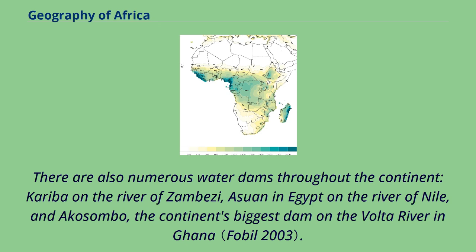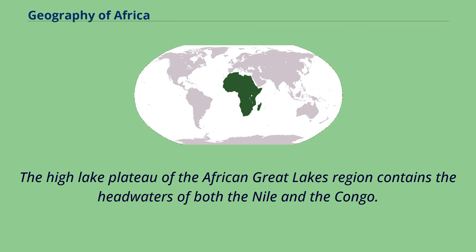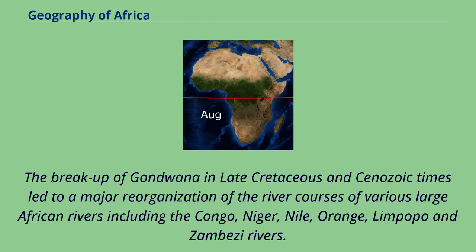There are also numerous water dams throughout the continent: Kariba on the Zambezi River, Aswan in Egypt on the Nile, and Akosombo, the continent's biggest dam, on the Volta River in Ghana. The high lake plateau of the African Great Lakes region contains the headwaters of both the Nile and the Congo. The breakup of Gondwana in late Cretaceous and Cenozoic times led to a major reorganization of the river courses of various large African rivers including the Congo, Niger, Nile, Orange, Limpopo and Zambezi rivers.